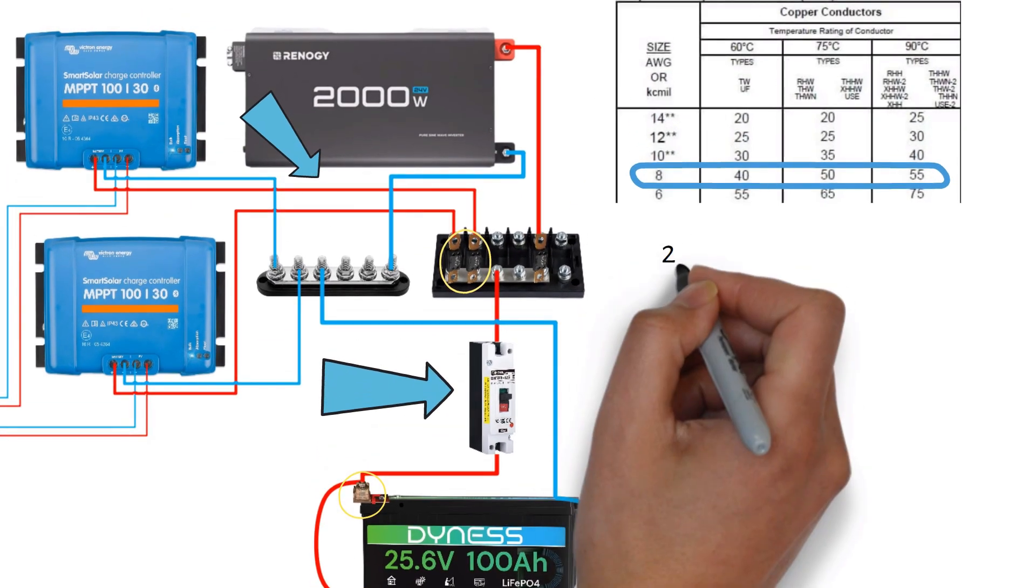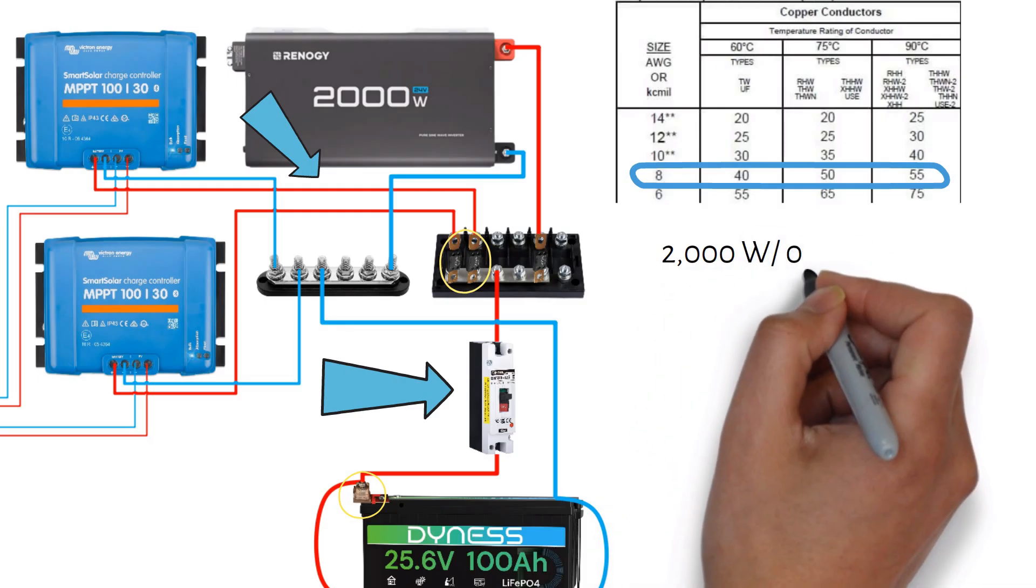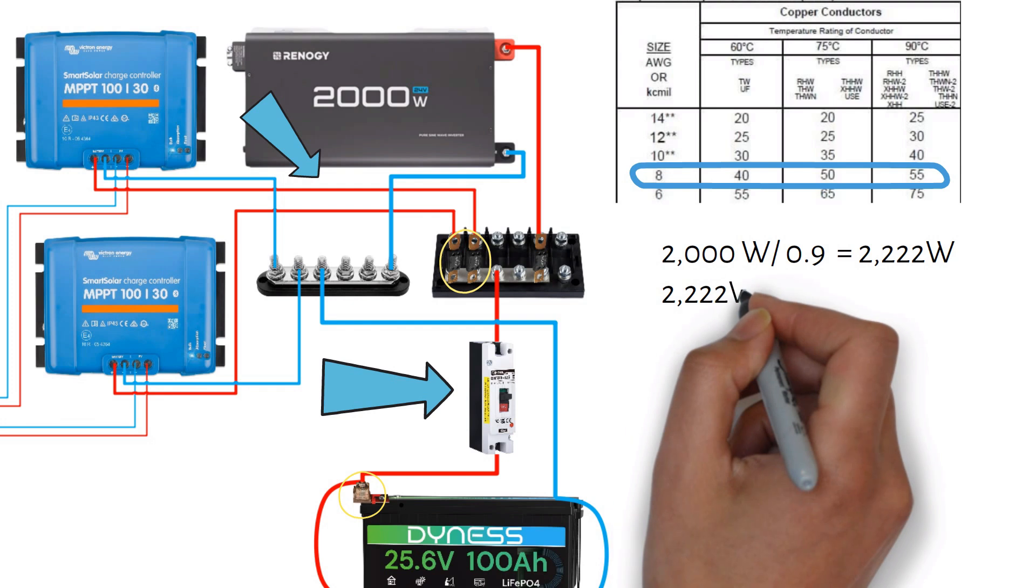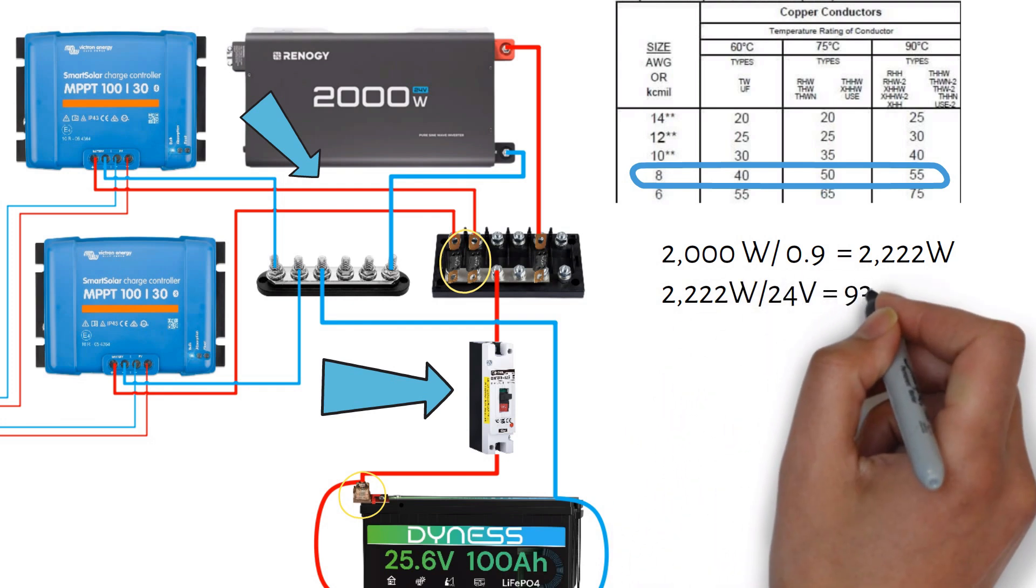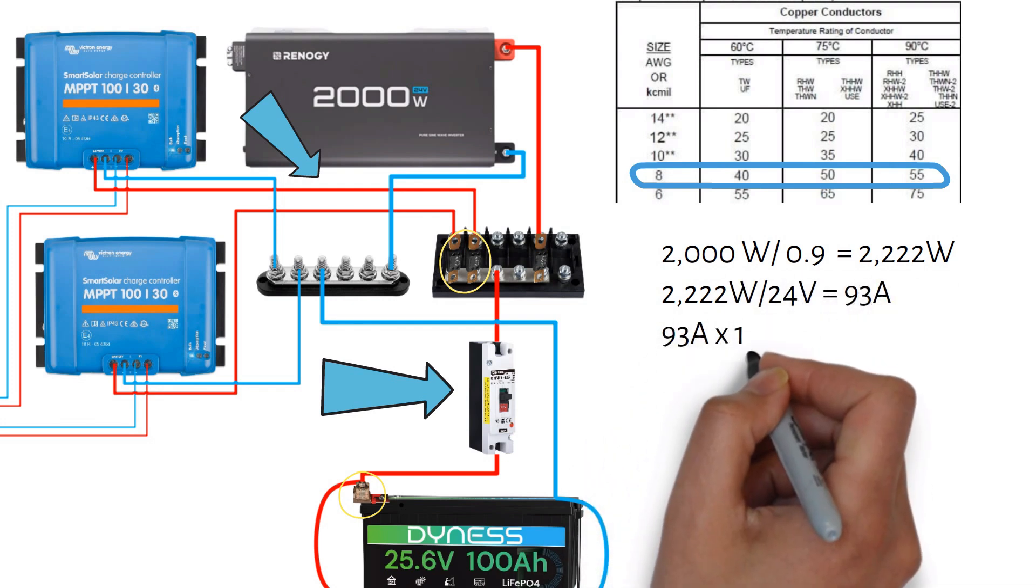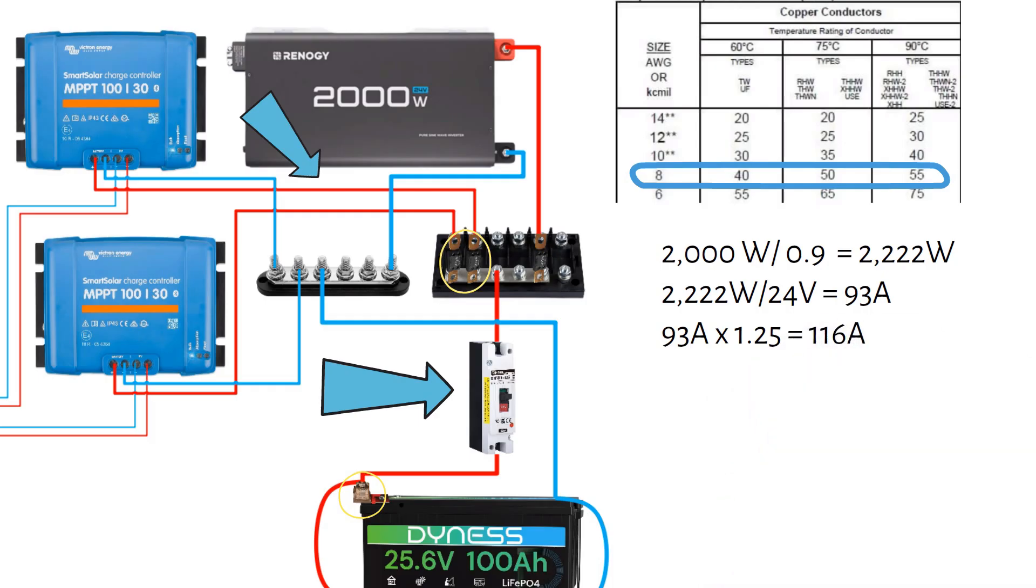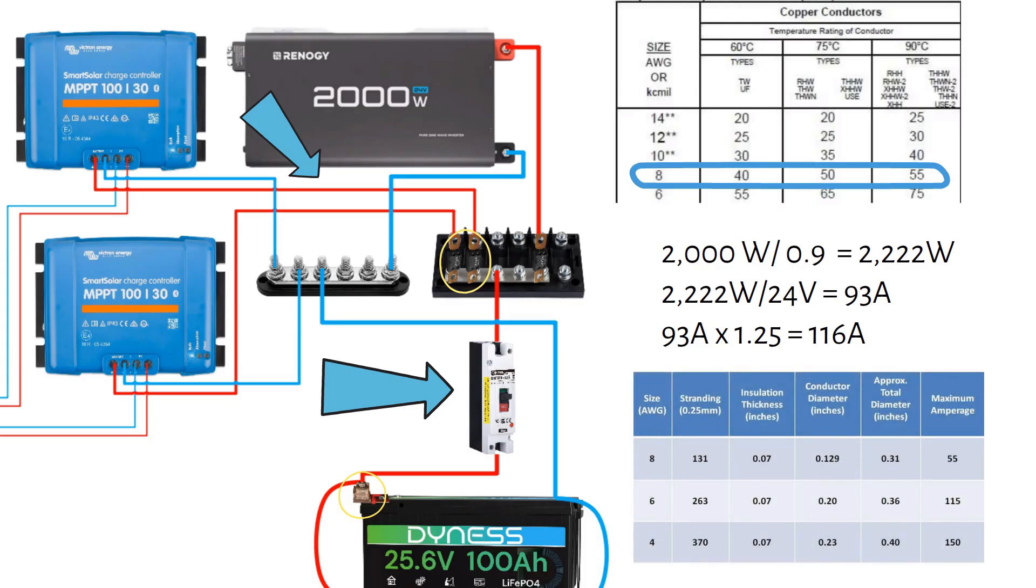The inverter draws a maximum of 2000 watts. Dividing by an efficiency factor of 0.9 and then dividing by 24 volts we get 93 amps. And applying a safety factor I get 116 amps. So I use a 125 amp breaker and a 4 gauge or 25mm square welding cable. The fuse and cable to the inverter is the same.